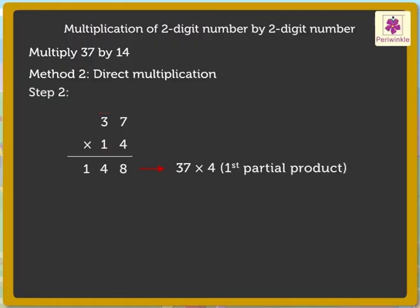Step 2: Multiply the multiplicand, that is 37, by the 1 in the 10th place of the multiplier. As the digit 1 is in the 10th place of the multiplier, we are actually multiplying 37 by 10. So we write a 0 below the digit 8 of the first partial product. Next, 7 into 1 is equal to 7. Write 7 below the digit 4 in the 10th column of the answer.